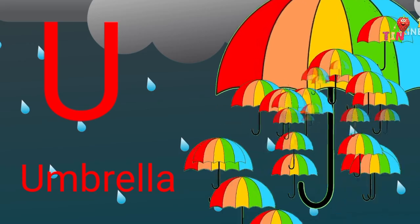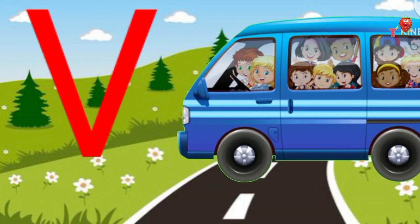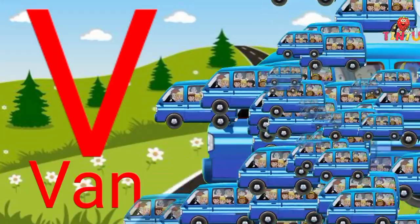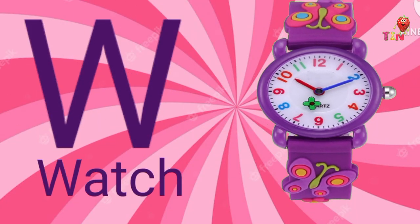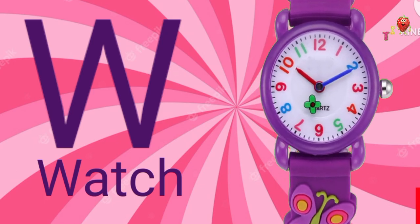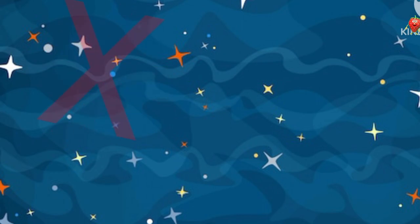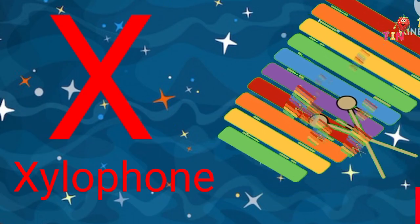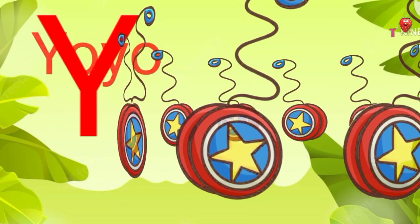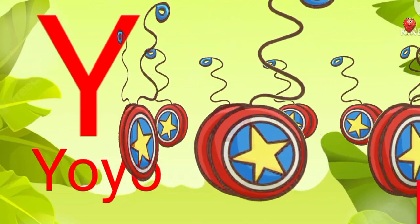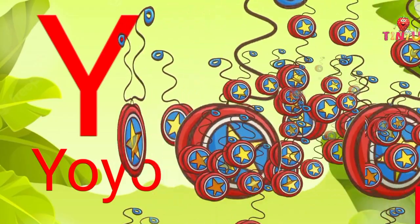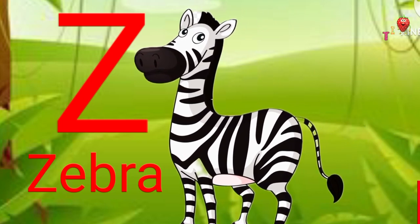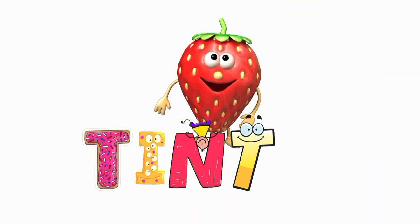U for Umbrella. V for Van. W for Watch. X for Xylophone. Y for Yoyo. Z for Zebra. Subscribe Tintu TV.